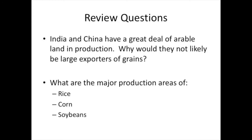Our review questions: India and China have had a great deal of arable land in production — why would they not likely be exporters of grain? And what are the major production areas of rice, corn, and soybeans? That concludes our module and gives you some idea of the types of questions that will be on the exam.